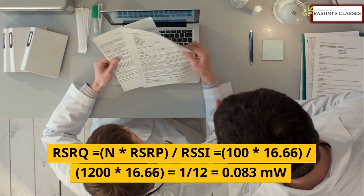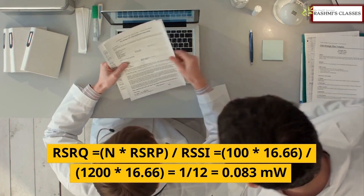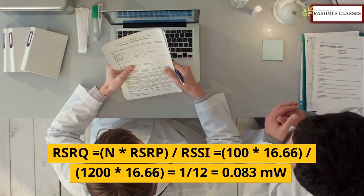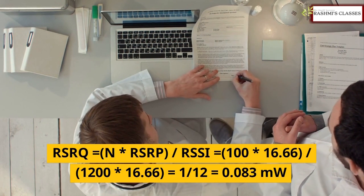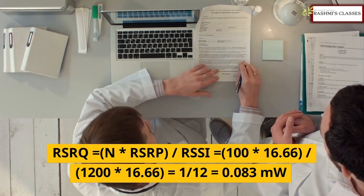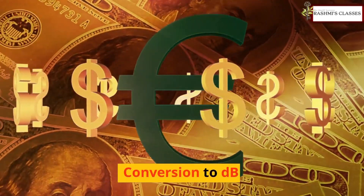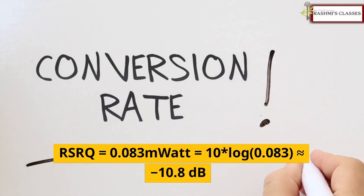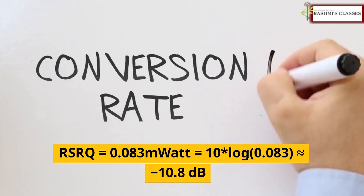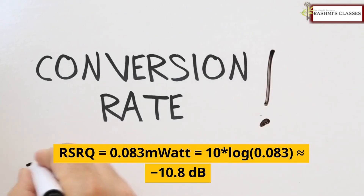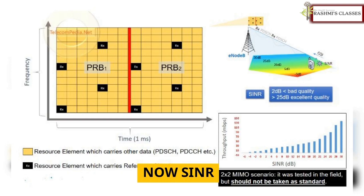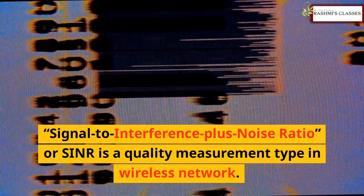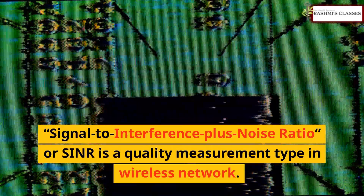Then RSRQ = N × RSRP / RSSI = 1 × 16.66 / (12 × 16.66) = 1/12 = 0.083 milliwatts. Converting to dB: RSRQ = 10 × log(0.083) ≈ −10.8 dB.